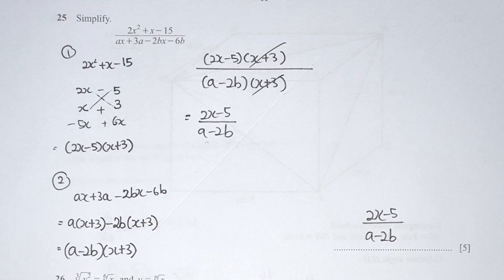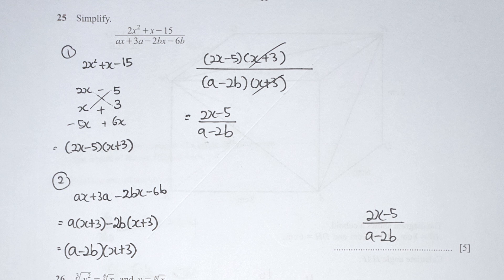For question 25, I split the workings into numerator and denominator separately. Factorizing 2x squared plus x minus 15 gives (2x minus 5)(x plus 3). For the denominator, I extract a from the first two terms to get a(x plus 3), and extract negative 2b from the remaining terms to get negative 2b(x plus 3). Rearranging gives (a minus 2b)(x plus 3), so x plus 3 cancels and the final answer is (2x minus 5) over (a minus 2b).